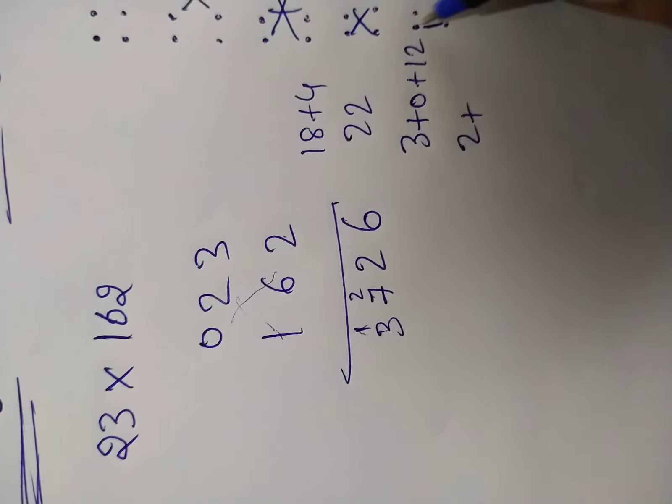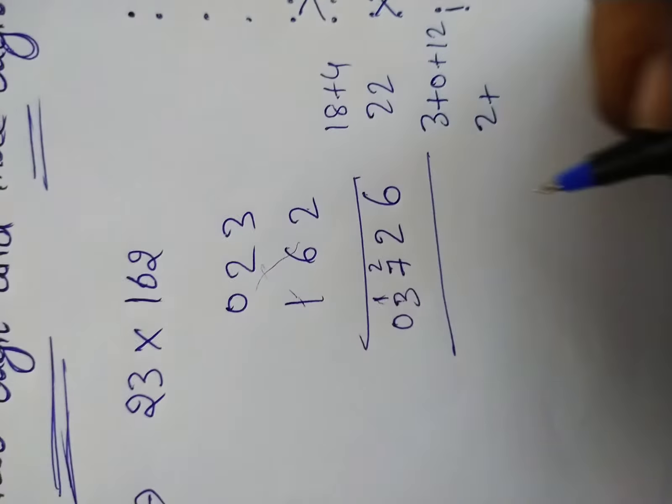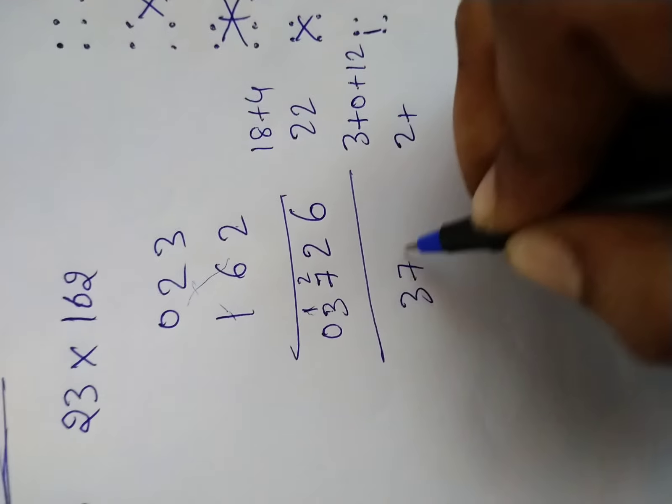Next tens place multiple. So 1, 0, 0. And finally our answer is 3726.